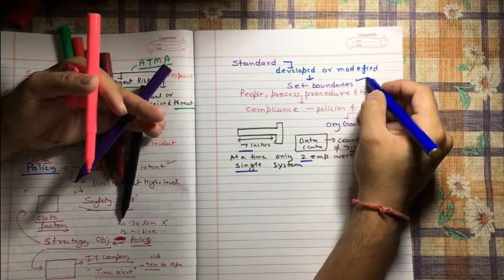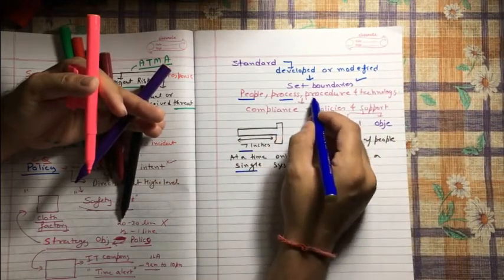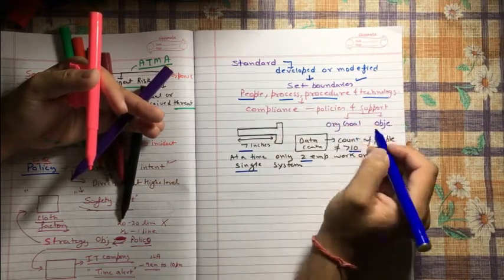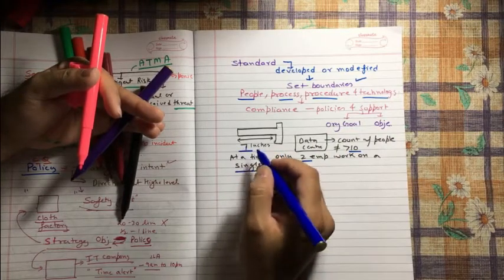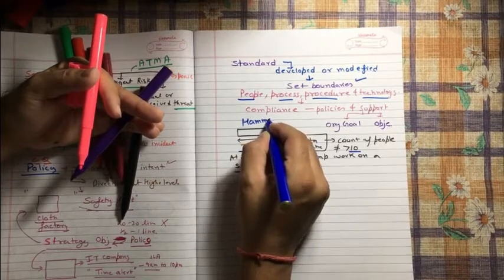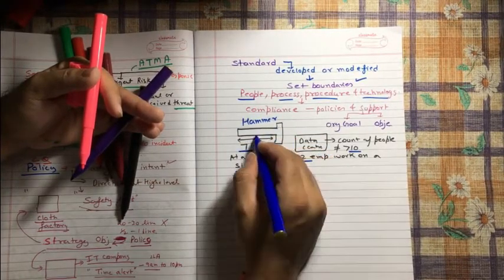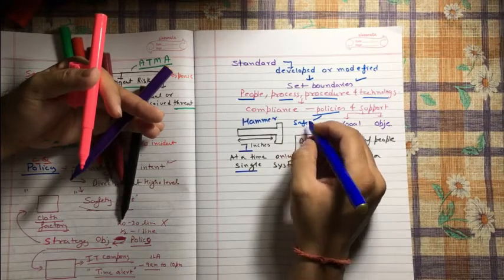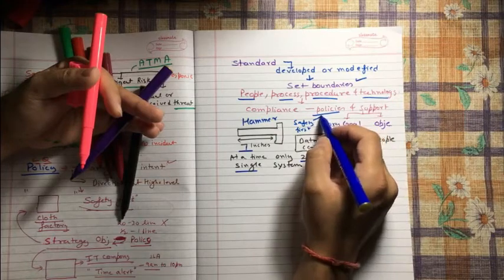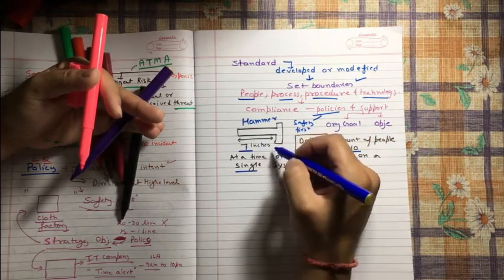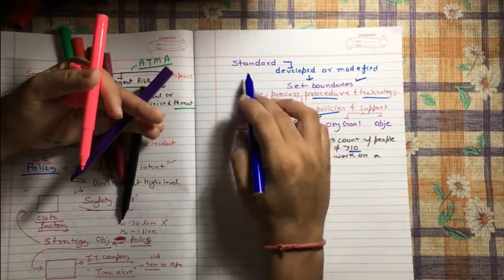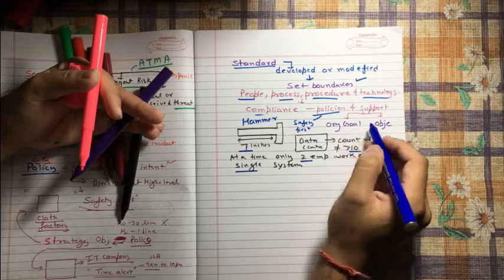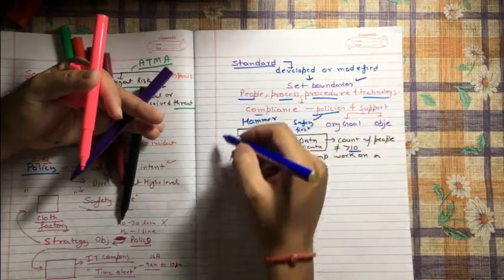So here I am setting certain boundaries on people, process, any procedure or some technologies. So these things come under our standards, and this will help us to get the compliance as per the policy. Because you know what, if we have this hammer more than seven inches, let's say 10 inches or 11 inches or five inches, then our policy which states that safety first is not going to be complied. Safety first, right? To comply with our policy, we must have a hammer of seven inches. And that's why we have a standard. And if our safety is going to be compromised, then of course it will not support our organization goals and objectives. So that's how these things are interrelated.